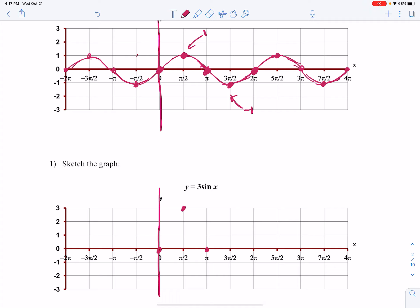At pi, I'm still at 0 because 3 times 0 is 0. At 3 pi over 2, I'm down here at negative 3 because I'm multiplying that original negative 1 by 3, and then I'm back. And then I'm repeating again.